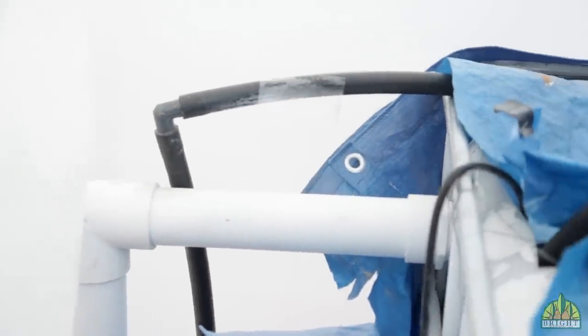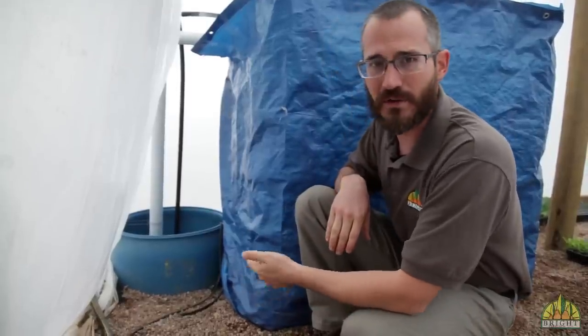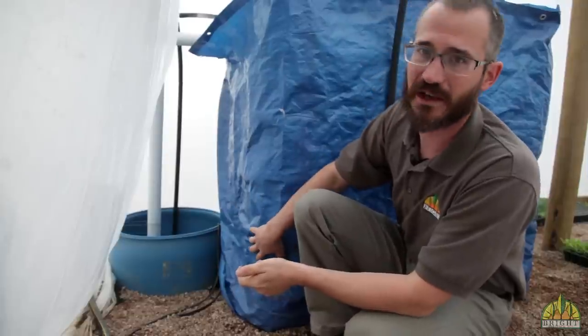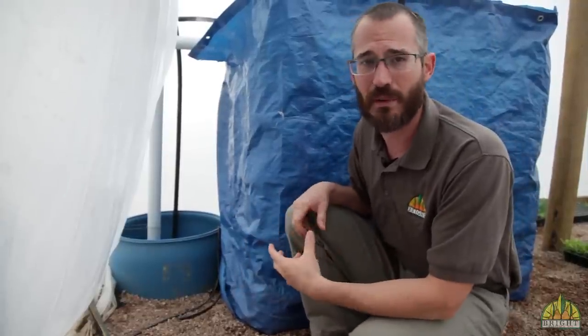The nice thing about this setup is that it allows him to use really low voltage pumps, so he's really not using an awful lot of electricity or pumping power to move water through his system. And a lot of that has to do with pumping up out of the bottom of this barrel with a small pump into this mixing tank, where he's able to use another small pump to pump that water out to his system.